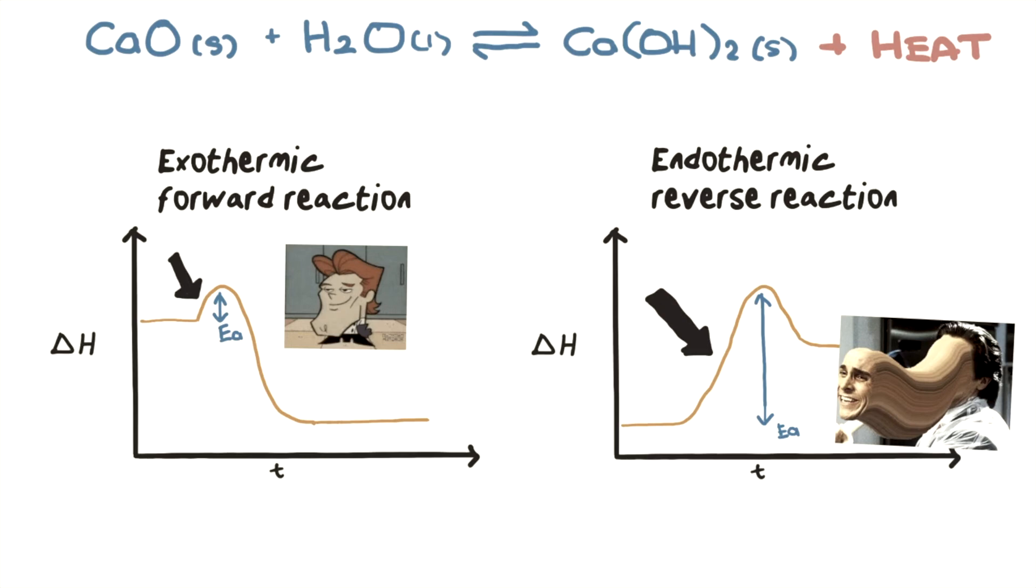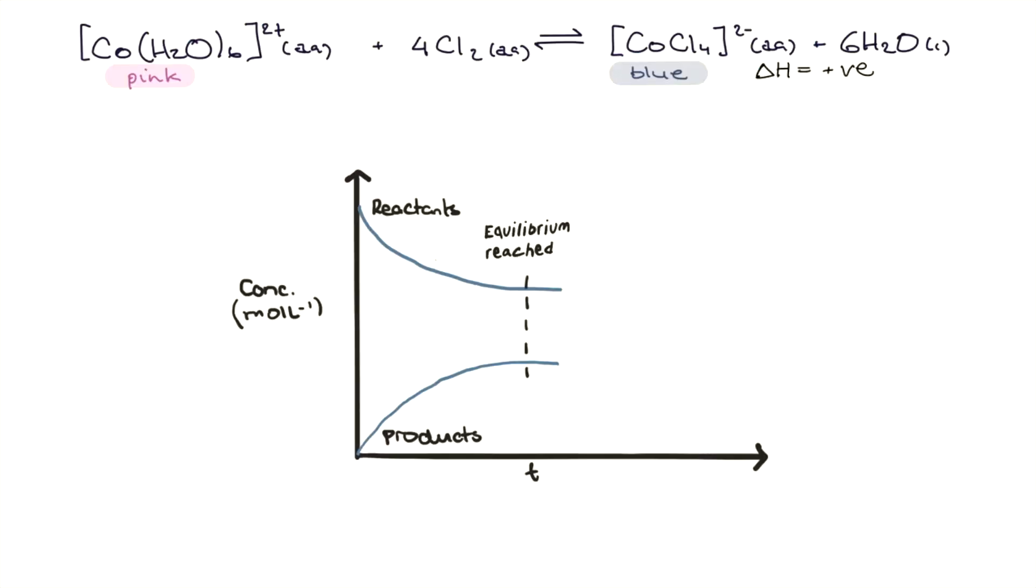But if you really think about it, if you take an endothermic reaction, for example the cobalt chloride equilibrium that you did in class, just to mix it up a bit, and pump it with more energy in the form of heat, there is a greater proportion of reactant molecules that can actually react, which essentially drops the concentration.